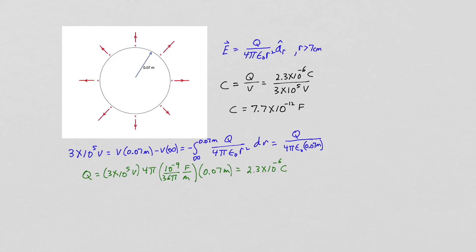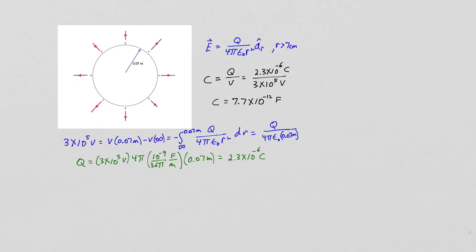Assuming the spark lasts for a tenth of a second, the current that's going to flow during that tenth of a second is our charge, 2.3 times 10 to the minus 6 coulombs, over our tenth of a second. This small current is why I could place my arm close to the Van de Graaff generator and have sparks flowing between the generator and my arm.